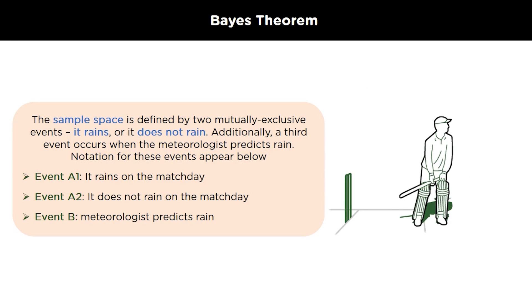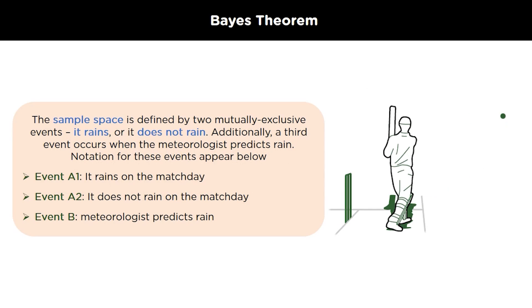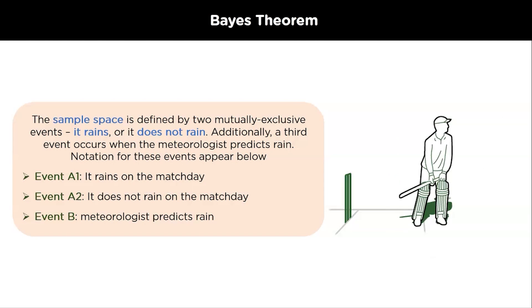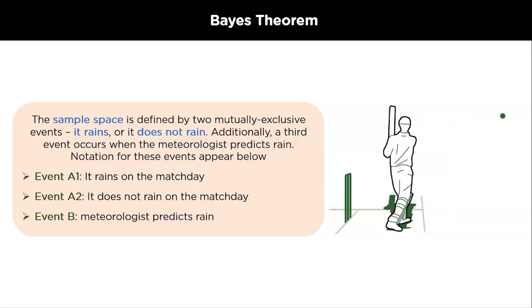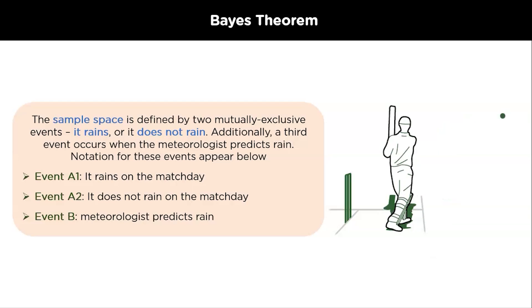So, the two sample spaces here are the events that it rains and it does not rain. Additionally, a third event is also there that meteorologist predicts the rain. So, the notation for these events appear below. Event A1 is equal to it rains on the match day, event A2 that it does not rain on the match day and event B is the meteorologist predicting the rain.